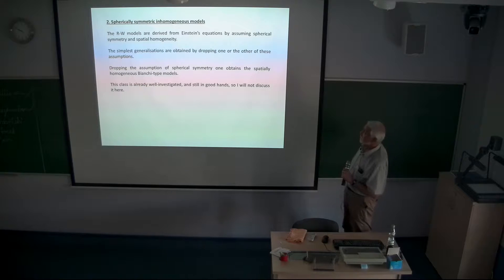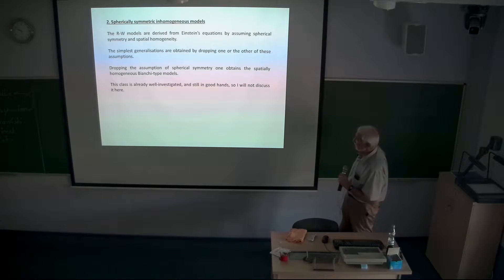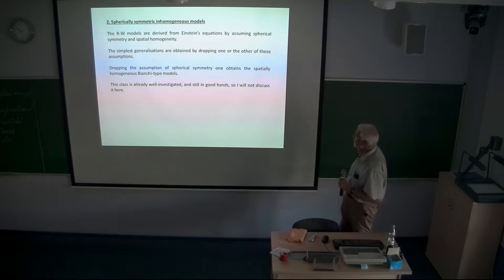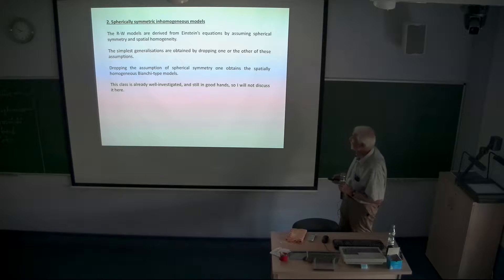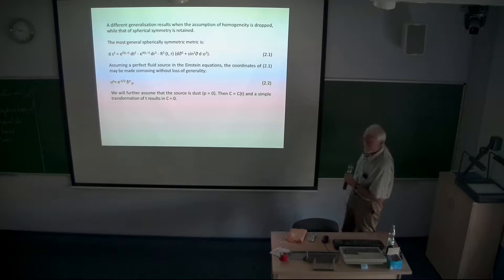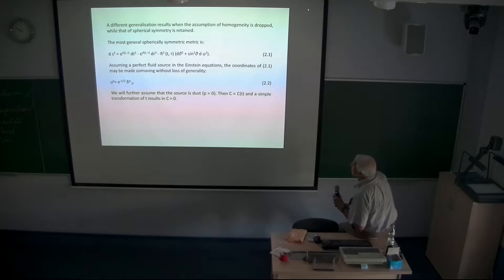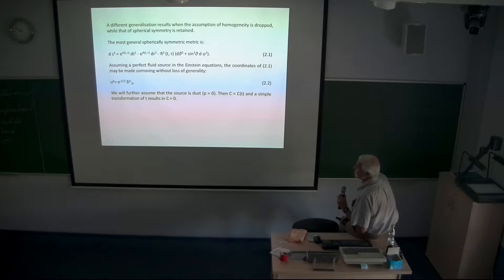Dropping the assumption of spherical symmetry, you obtain the spatially homogeneous Bianchi-type models, but this class is already well investigated and still being investigated — it remains in good hands, and you've heard quite a lot about it at this conference. I will discuss the dual generalization that results when the assumption of homogeneity is dropped and that of spherical symmetry is retained.